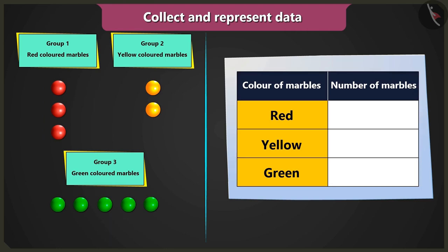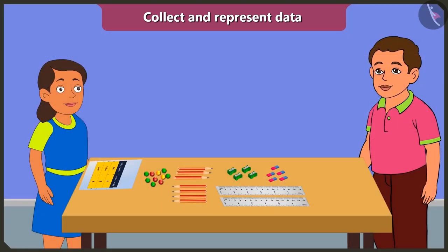Yes. Now in the column count of marbles, we will write three beside red color, two beside yellow color, and five beside green color. Well done, Bubbly. You represented the data very well.